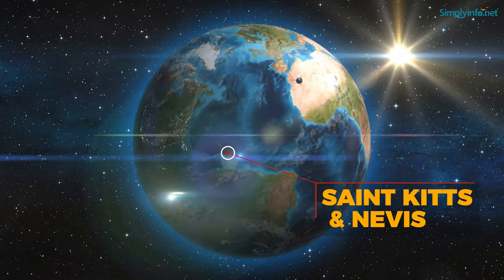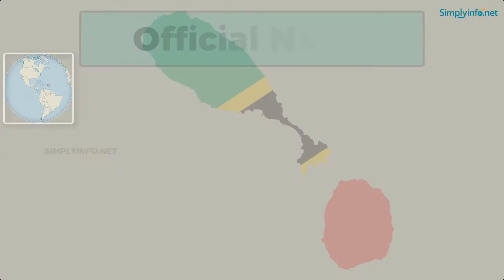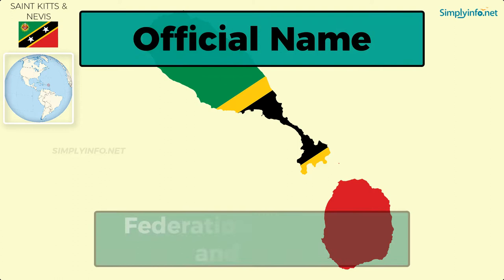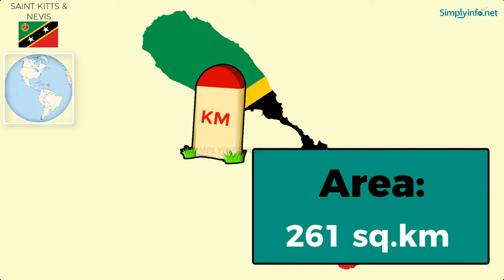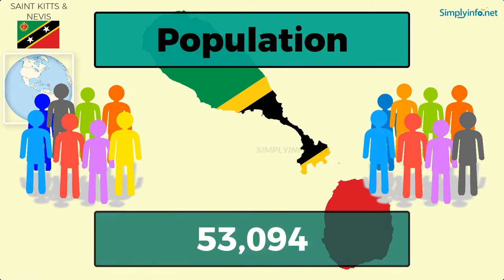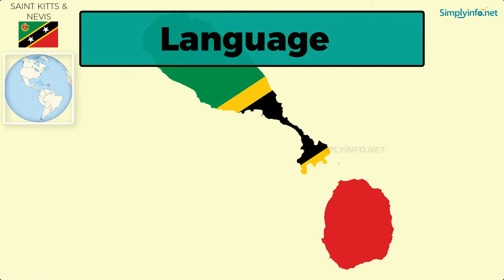Name: Saint Kitts and Nevis. Official Name: Federation of Saint Kitts and Nevis. Capital: Basseterre. Area: 261 square kilometers, in which Saint Kitts is 161 and Nevis is 100. Population: as of 2018, it is 53,094. Language: English.